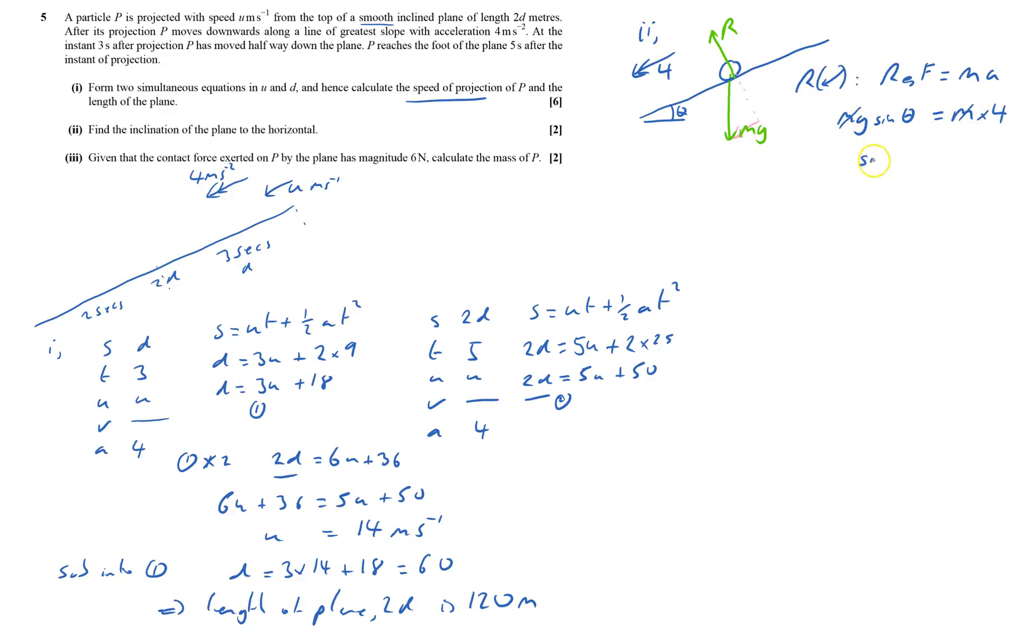m's cancelled out, so sin theta equals 4 over 9.8, and so that'll be theta equals sine inverse of that, which is 24.0895 degrees, or theta equals 24.1 degrees to 3 significant figures.